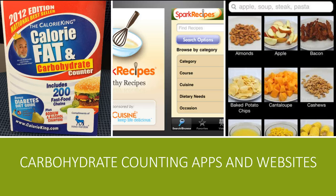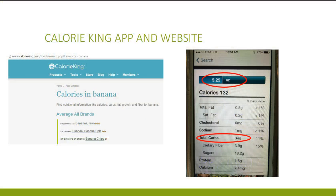For example, the CalorieKing app is free to download on your iPhone or tablet, or you could bookmark it as CalorieKing.com on your Android phone. Here's how you use it. Let's use the food search to find the carb count for bananas.